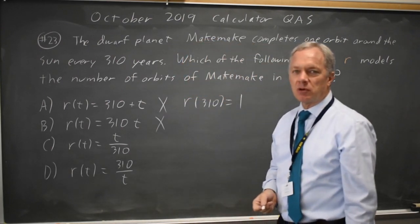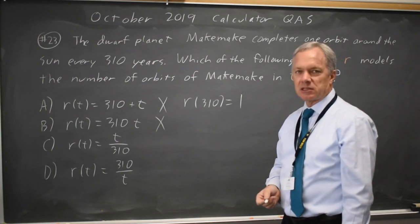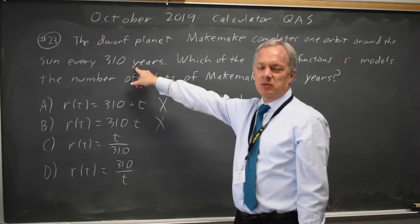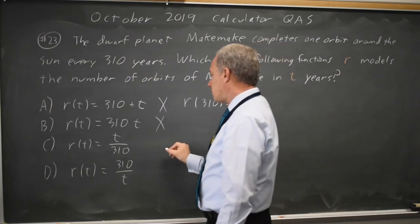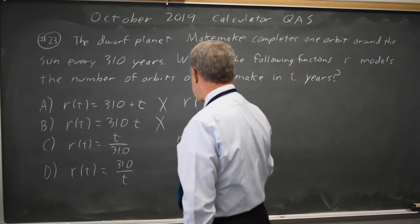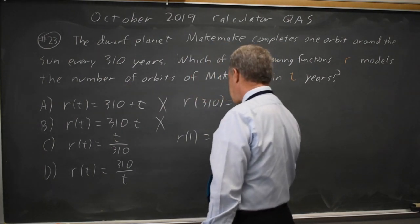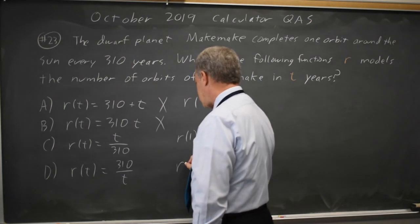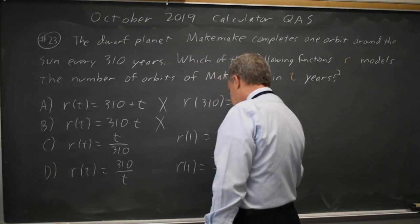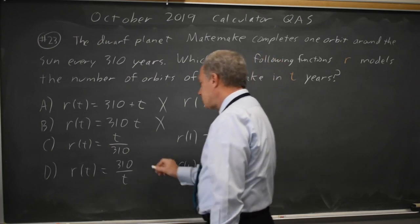C and D both give you one orbit in 310 years. But if it takes 310 years to do one orbit, you do less than one orbit in one year. At T equals 1, choice C gives us 1 over 310, while D gives you r(1) equals 310 over 1 equals 310 orbits in one year, which is clearly wrong.